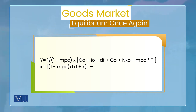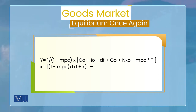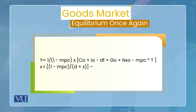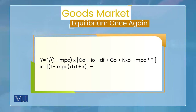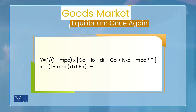On the left side of the equation is Y, which represents aggregate output — the income earned within an economy. Income produced outside the economy is not included. The autonomous component is not related to the interest rate, while the second component is. The IS curve represents the relationship between the interest rate and income or output.